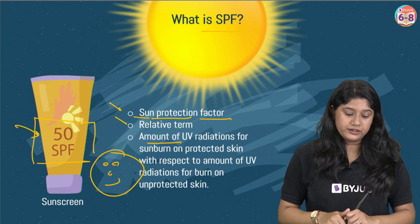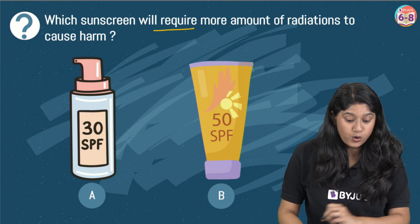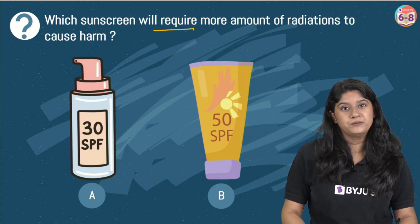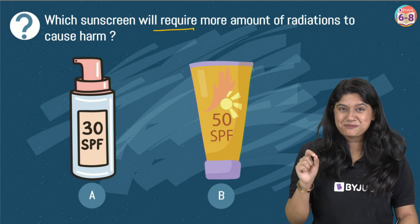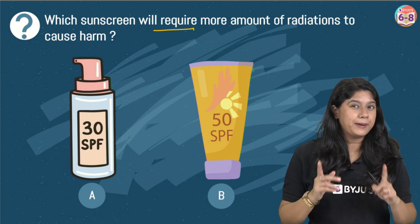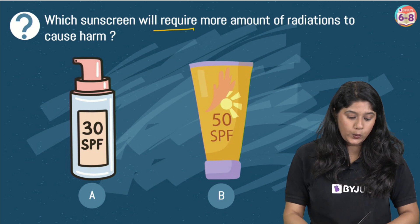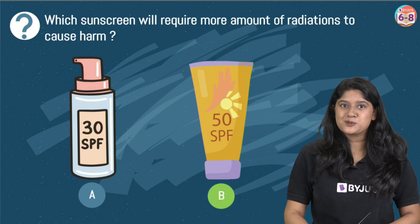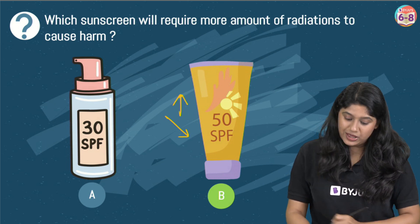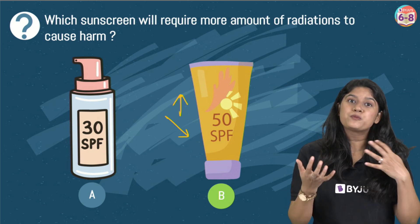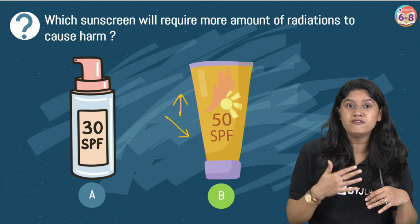Now I have a question for you. Which sunscreen among these two will require more amount of radiation to cause harm? We have SPF 30 and SPF 50. Which one will you pick? Of course we will go with SPF 50 because we know that higher the SPF value, the more protection we have from sunburn and from harmful UV radiation.